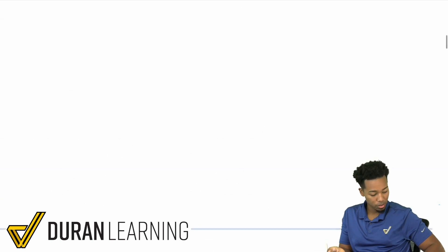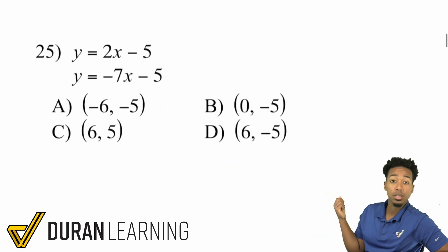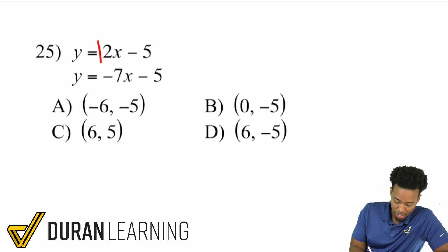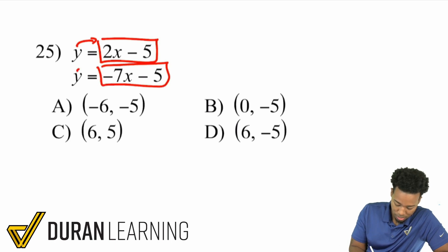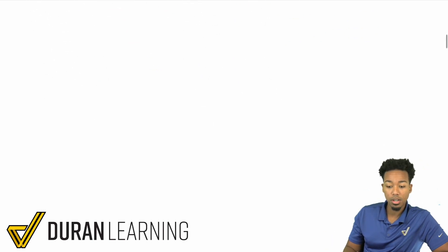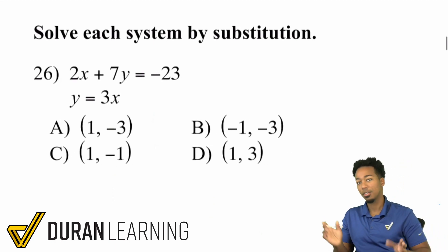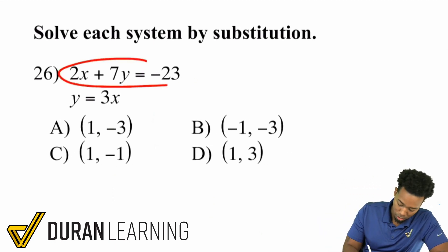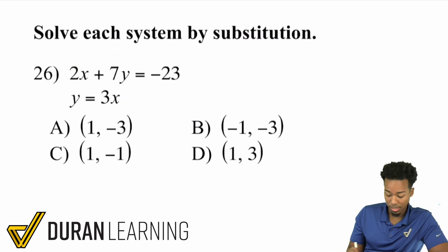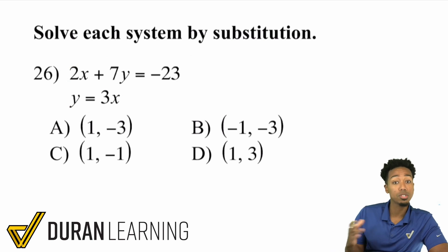Earlier in Part 1, we had problems where the Y's were already by themselves. With a system, the variables represent the same values, so if Y equals one expression and Y equals another, those two expressions are equal to each other — we just set them equal and solve. But over here it's a little different. We have a whole equation, but the Y isn't by itself. However, if you look at the second equation, the Y is by itself, and we can still use substitution.